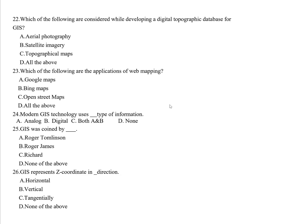Question twenty-two: Which of the following are considered while developing a digital topography database for GIS? Options are aerial photography, satellite imagery, topographic maps, and all of the above. The correct answer is all of the above, since a topography database is a collection of information from all these sources.